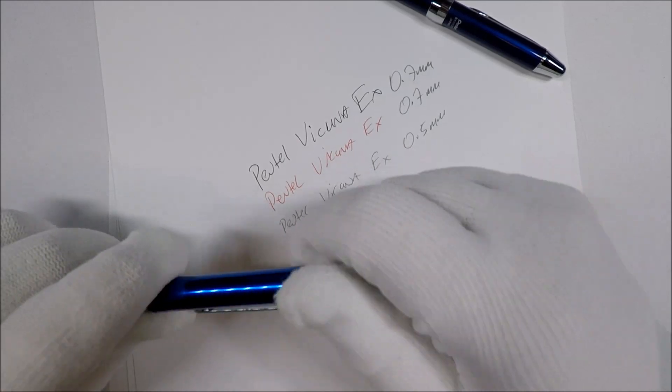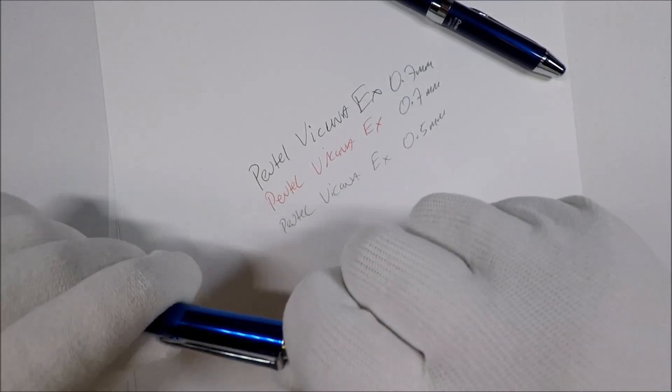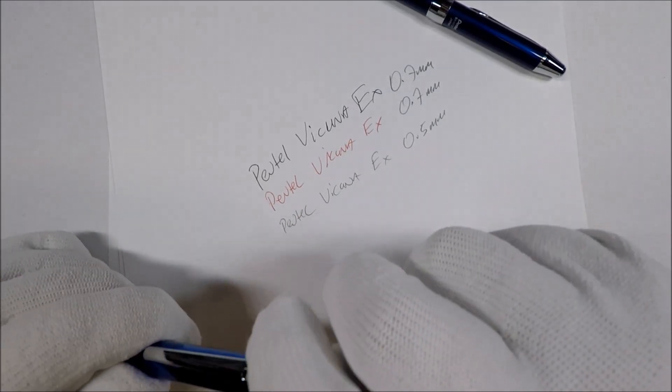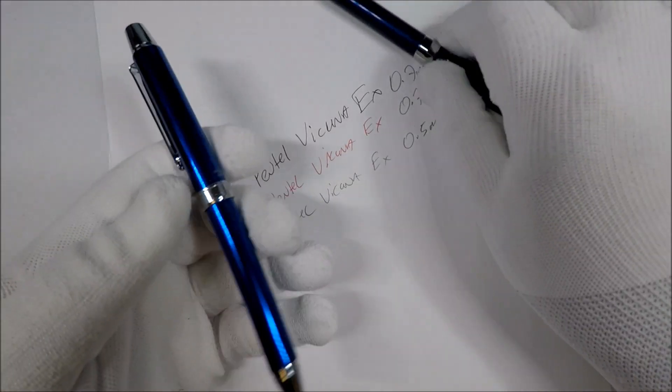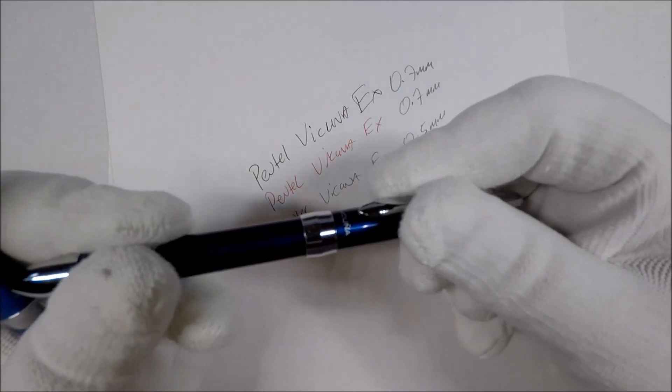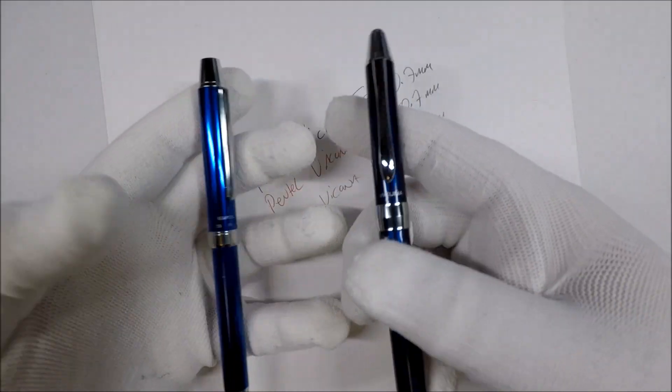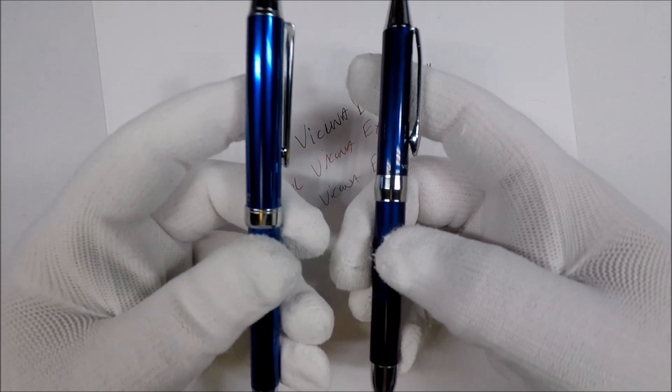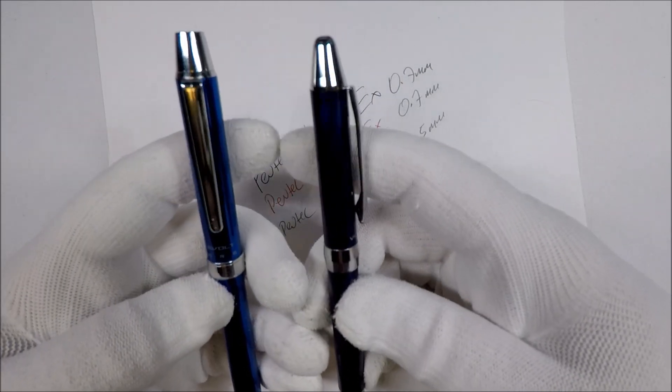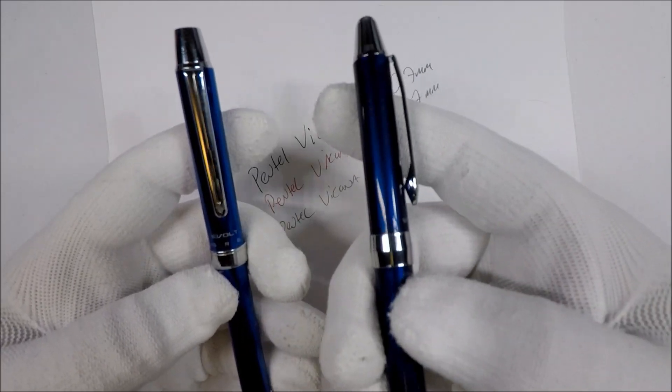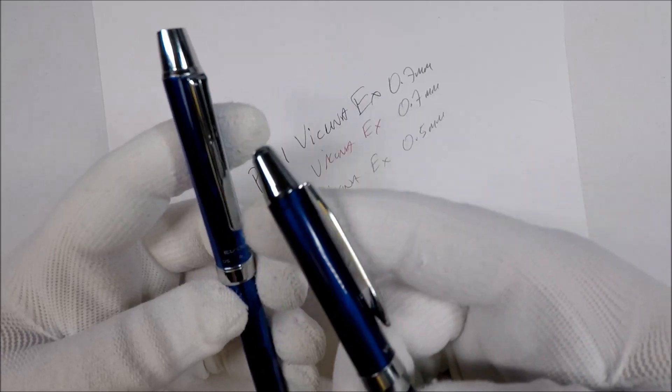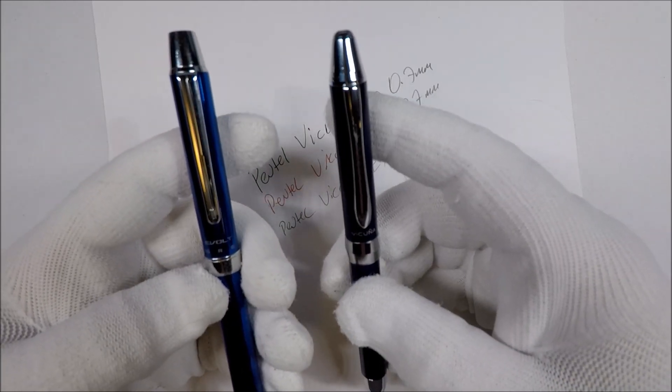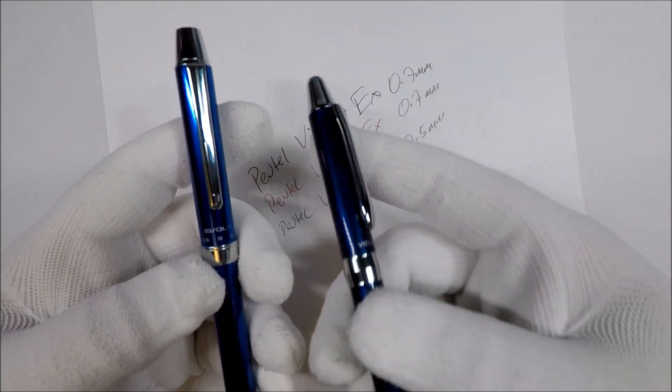It really seems like the Vicuna and the E-Volt are just sort of very similar pens. I picked them both in blue. I guess maybe if you like the E-Volt blue versus the Vicuna blue, this is more of a royal blue and this is a metallic blue.